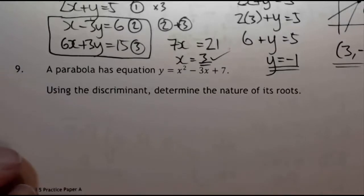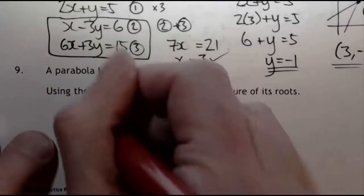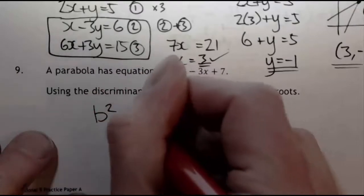What you've got is an equation where you use b squared minus 4ac.